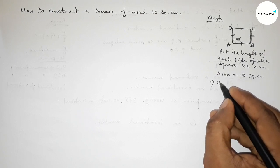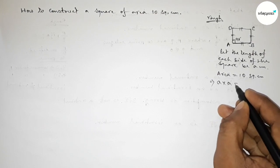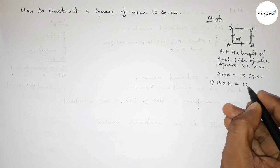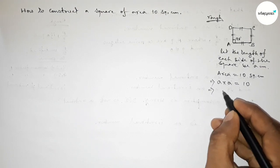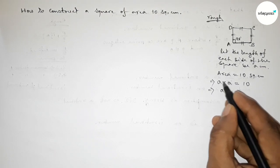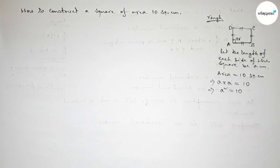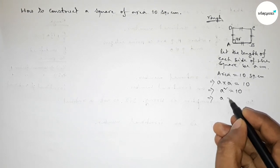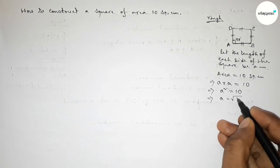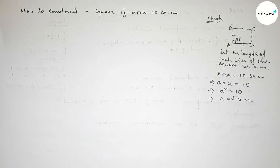The area of a square equals side × side. Here the length of each side equals 'a', so a × a = 10, which implies a² = 10, therefore a = √10 centimeters.